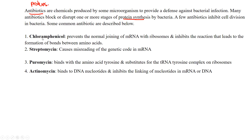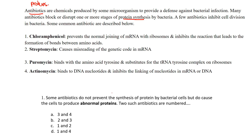The question says some antibiotics do not prevent the synthesis of protein — so they're not preventing the protein from being produced — but they do cause the cells to produce abnormal proteins. We know that abnormal proteins often occur with a mutation. You've probably seen information about mutations: point mutations, missense mutations, nonsense mutations, and frameshift mutations. The question is asking about antibiotics that still allow protein production, but the protein produced is abnormal.